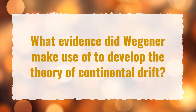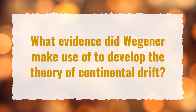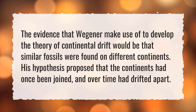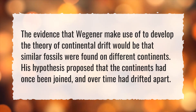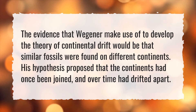What evidence did Wegener make use of to develop the theory of continental drift? The evidence that Wegener made use of to develop the theory of continental drift would be that similar fossils were found on different continents. His hypothesis proposed that the continents had once been joined, and over time had drifted apart.